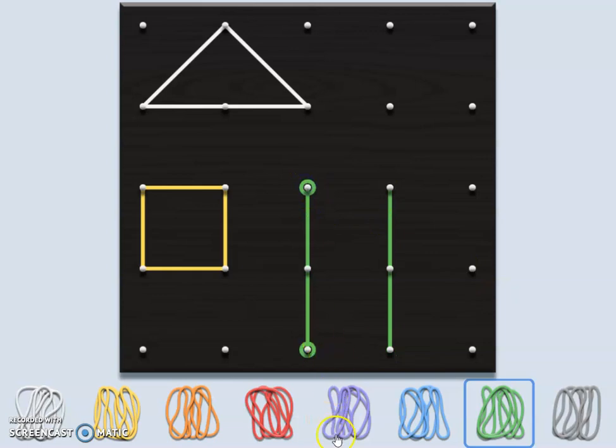...my rectangle has one, two short sides and one, two long sides. So I made three shapes today: a triangle, a square, and a rectangle. Thank you for practicing with me.